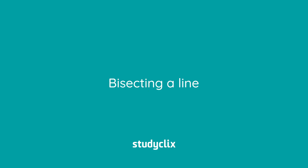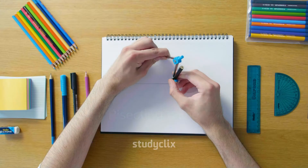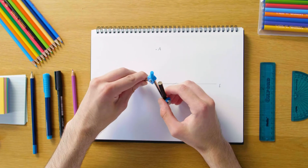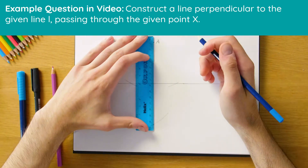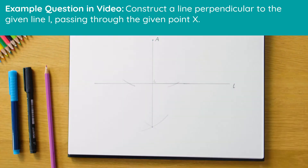Hi guys, in this video we're going to be bisecting a line segment. This is really handy — it comes up all the time for junior cert, and for leaving cert it's really important for other constructions. So let's see how it works. This is what our final product is going to look like: a line passing through the point A and perpendicular to the line L. Let's get back to the beginning and see how this is done.